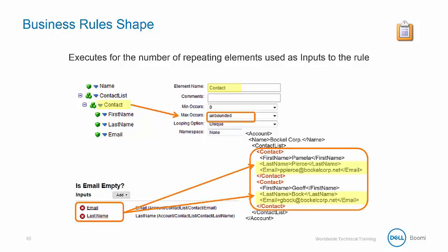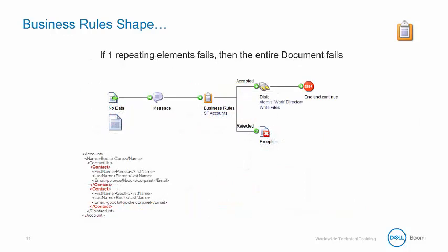This business rule would execute the number of times the looping elements exist in the incoming XML document. In this case, it would execute two times. So, if one repeating element fails, the entire document fails.